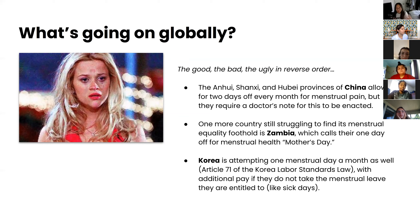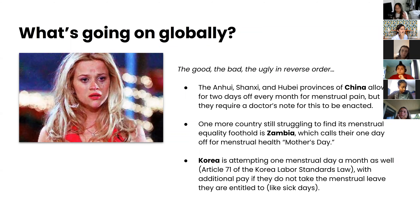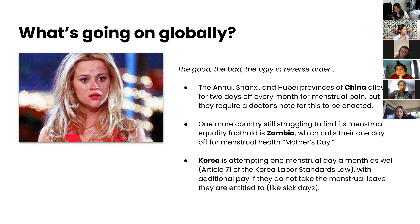In the Hunan, Shanxi, and Hubei provinces in China, women are allowed two days off every month for menstrual pain, but they require a doctor's note. While this is a huge step for China given the status of women there, it sadly still infantilizes women and can be ineffective, as about half the medical doctors in Hubei province are men and have been shown to provide lower quality of care — sourced from the NIH. Another country still struggling is Zambia, which calls their one day off for menstrual health 'Mother's Day.' Though the name is problematic, one positive is that administrators can prosecute employers who deny this policy.